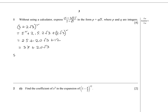Now let's use this simplified form in the numerator instead of (5 + 2√3)². So we write (37 + 20√3) / (2 + √3).